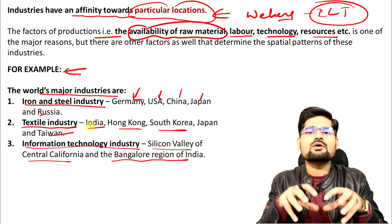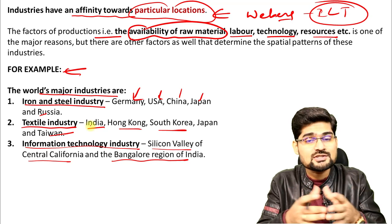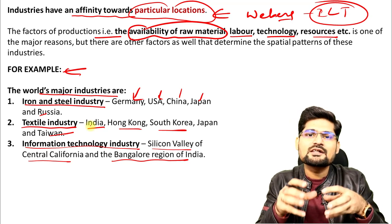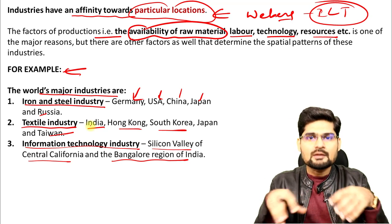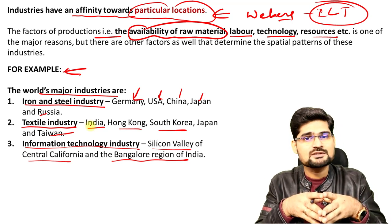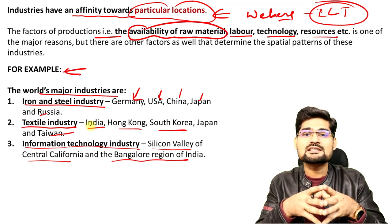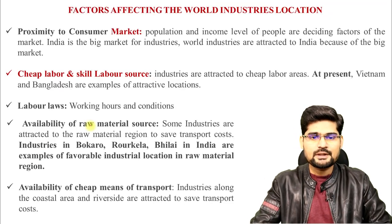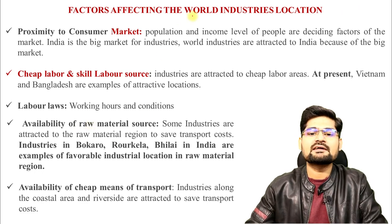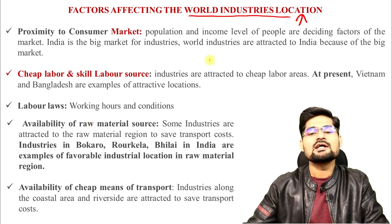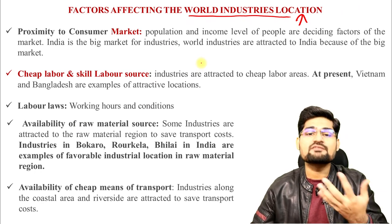Why are these concentrations in particular belts? Why is there a geographical and locational pattern in the establishment of these industrial hubs? That's where Weber's industrial location theory and factors for industry establishment come into the picture. Let's analyze the factors affecting world industrial location, because the problems are associated with these factors.